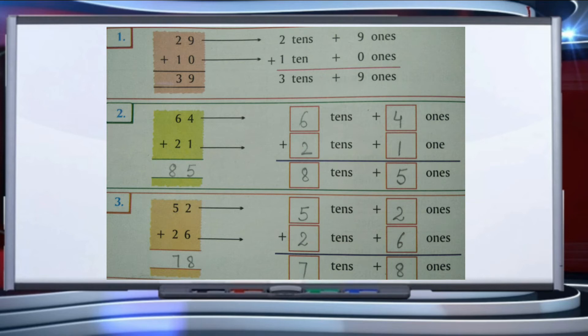First question: 29 plus 10. We write 29 as two tens plus nine ones, and 10 as one ten plus zero ones. Step one, add the ones: nine ones plus zero ones — nine plus zero equals nine ones. Step two, add the tens: two tens plus one ten — two plus one equals three tens. So 29 plus 10 equals thirty-nine.